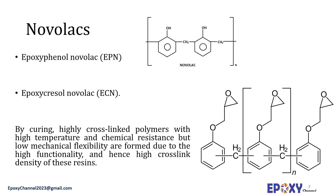Novolacs are produced by reacting phenol with formaldehyde. The reaction of epichlorohydrin with novolac products gives novolacs with glycidyl residues, such as epoxy phenol novolac (EPN) or epoxy cresol novolac (ECN). These highly viscous to solid resins typically carry 2 to 6 epoxy groups per molecule. When cured, highly cross-linked polymers with high temperature and chemical resistance but low mechanical flexibility are formed, due to the high functionality and hence high cross-link density of EPN and ECN.